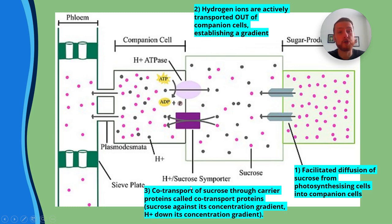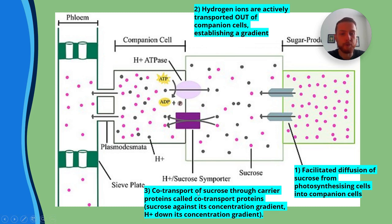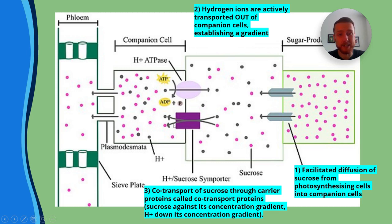Next, the co-transport of sucrose will occur — link this to your knowledge of co-transport of glucose in digestion. The co-transport of sucrose occurs through a special carrier protein called a co-transport protein, and sucrose moves against its concentration gradient.